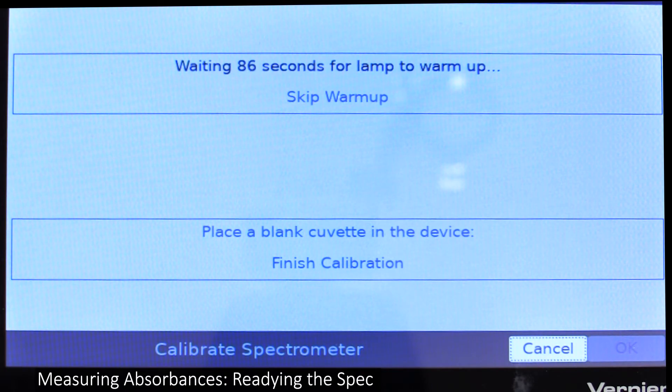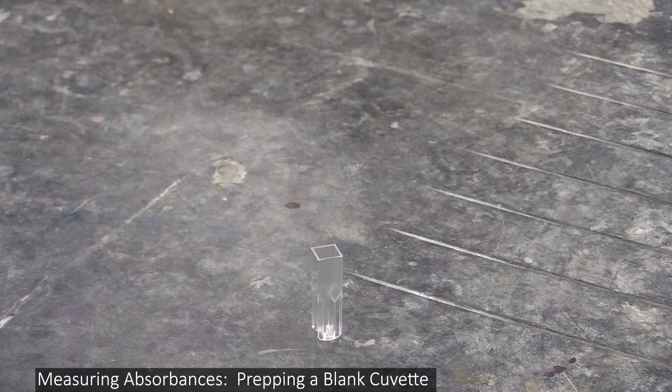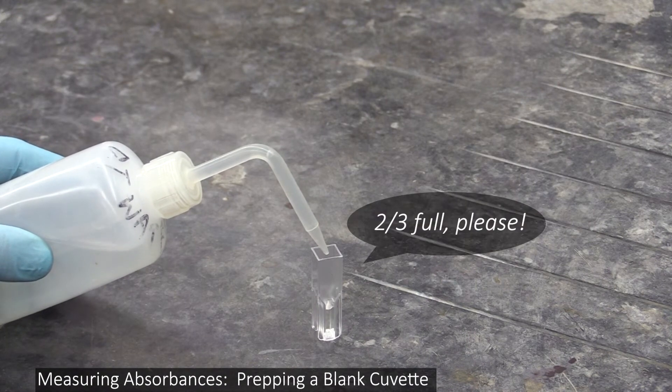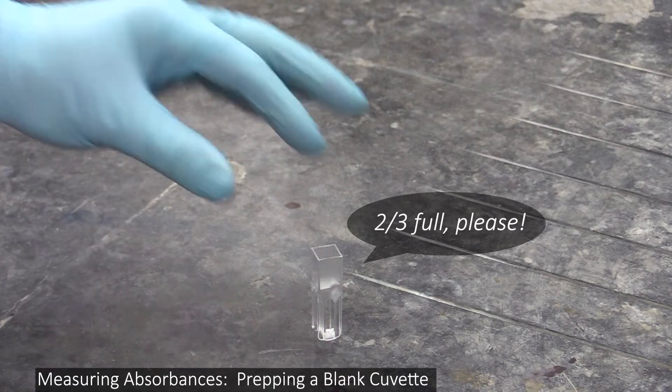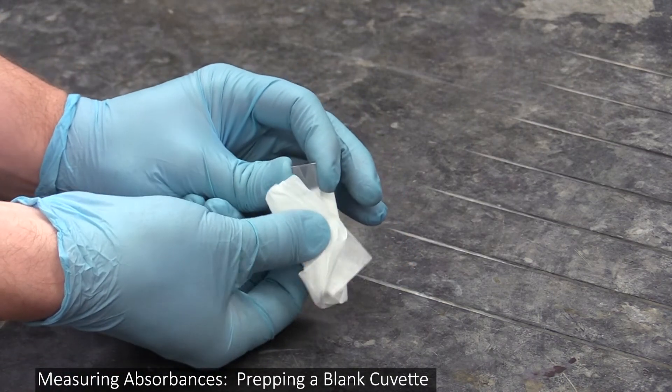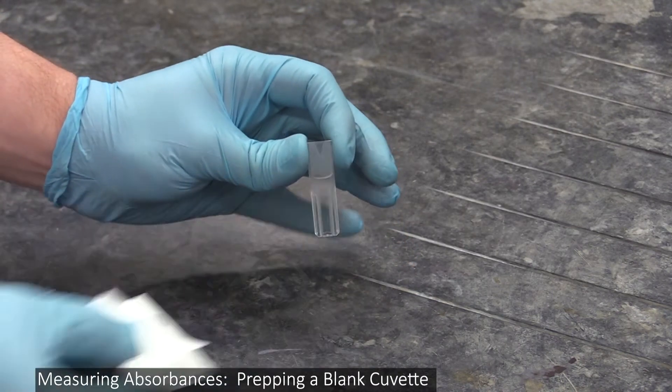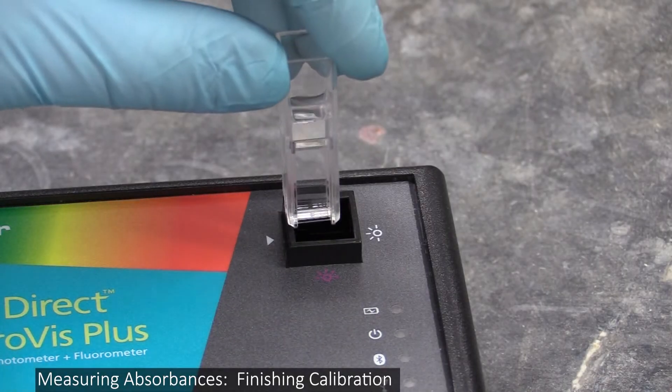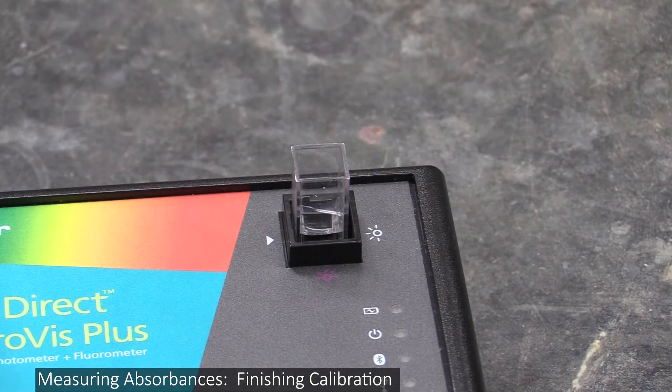While you're waiting for the countdown timer to finish, you can prepare a blank cuvette and put it in the spec. To do this, fill a cuvette about two thirds full of water, wipe its sides down with a chem wipe to make sure you get all the fingerprints and dirt and junk off it, then put it in the sample holder, making sure you have it in the right orientation.